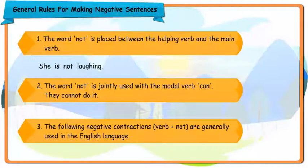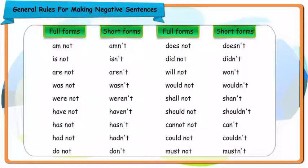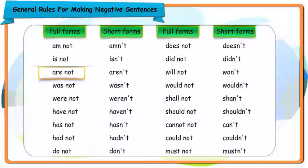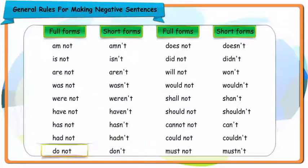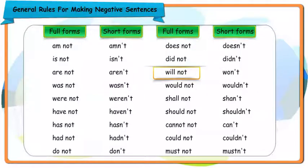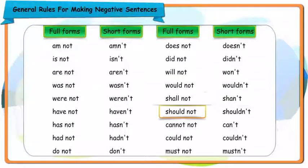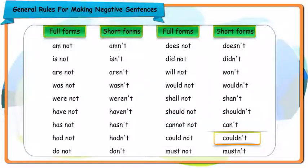The following negative contractions (verb plus not) are generally used in the English language. Full forms and short forms: am not / ain't, is not / isn't, are not / aren't, was not / wasn't, were not / weren't, have not / haven't, has not / hasn't, had not / hadn't, do not / don't, does not / doesn't, did not / didn't, will not / won't, would not / wouldn't, shall not / shan't, should not / shouldn't, cannot / can't, could not / couldn't, must not / mustn't.